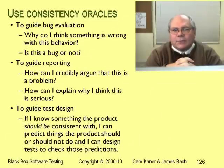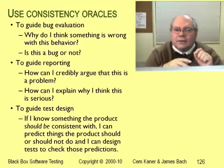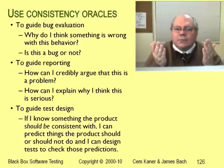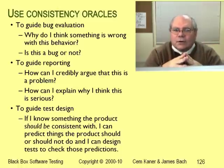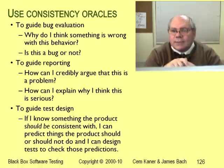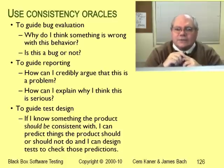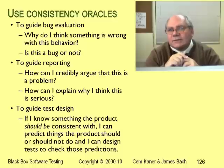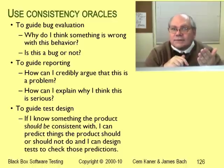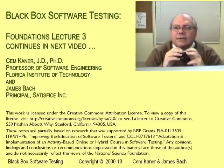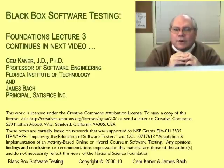Let me sum up on the consistency oracles. We use these in three common ways. When we find a bug, we try to figure out why it's a bug — if the answer isn't obvious, it's useful to ask what type of inconsistency am I reacting to, then do some research to see if our hunch is something we should act on. When we report a bug, we sometimes need to explain why we think it's a bug, and these heuristics often guide our thinking about how to structure that explanation. Finally, we use these oracles to guide test design: anytime I know what the product is supposed to do, I can design tests to check whether the product does it.